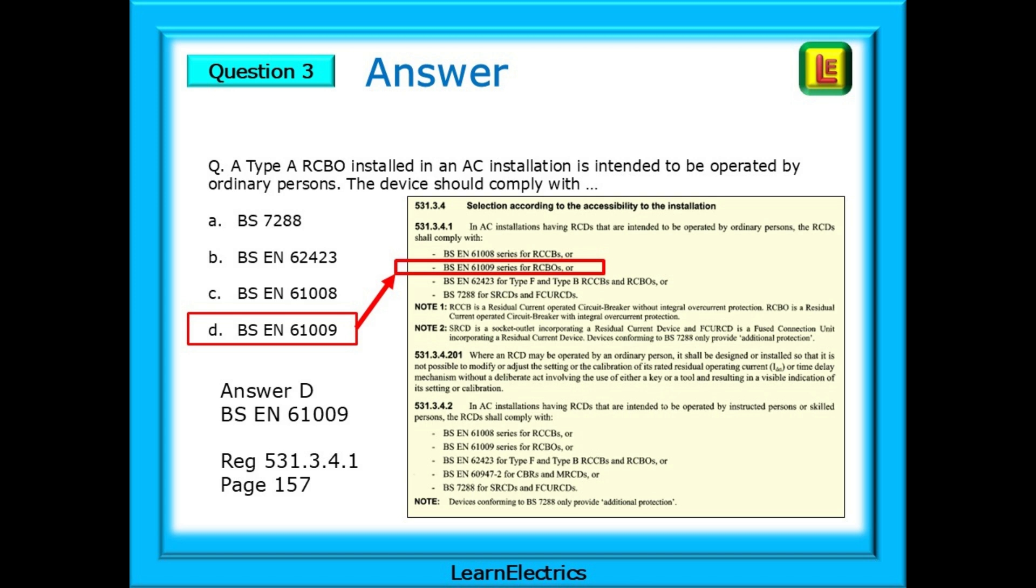BS EN 62423 is for type F and type B, whereas the question specifies type A.